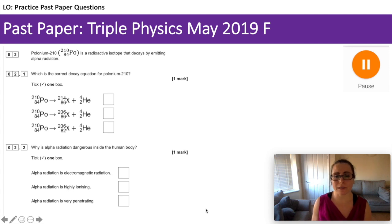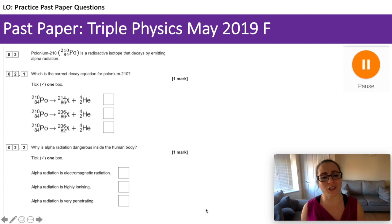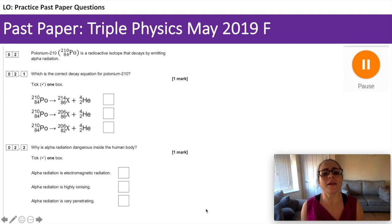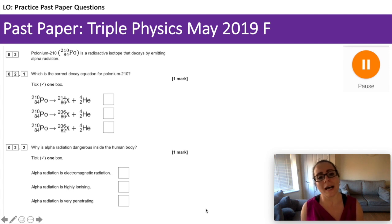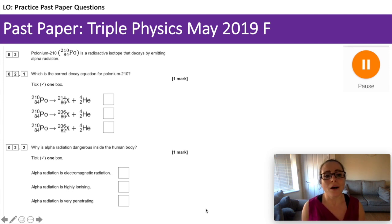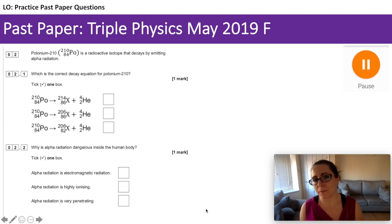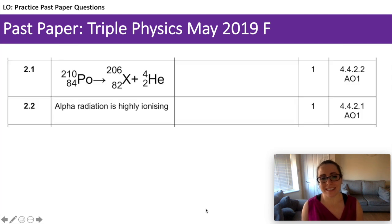Here we are again — another question which could appear on combined as well. Which is the correct decay equation for polonium-210? All three of them have polonium-210 with 84 as the atomic number, and they are all showing polonium-210 to be an alpha emitter — a helium nucleus with a mass of 4 and a charge of 2. But element X in the middle differs. Use your math skills to work out which one is correct. Why is alpha radiation dangerous inside the human body? Have a think about the properties of alpha radiation. And the answer: if we're an alpha emitter, 210 minus 4 gives us 206, and 84 minus 2 gives us 82.